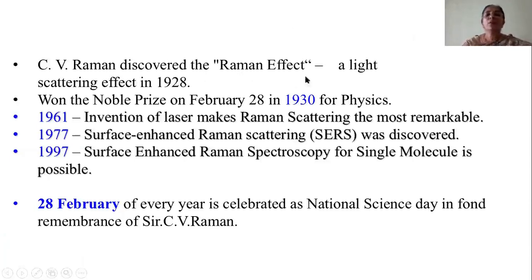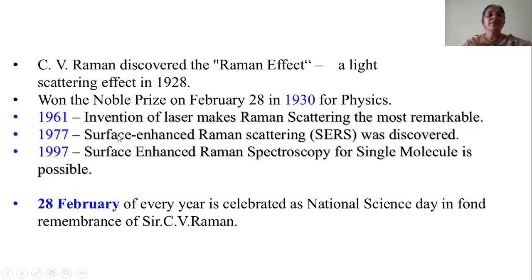C.V. Raman discovered the Raman Effect, which is a light scattering effect, in the year 1928. He won the Nobel Prize on February 28th, 1930 for this experiment. In 1961, the invention of the laser made Raman scattering the most remarkable. In 1977, surface-enhanced Raman scattering was discovered.